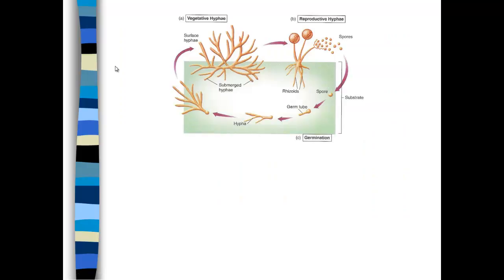Vegetative hyphae will generally grow at the surface since molds are aerobic. They will produce reproductive hyphae, which will release their spores. The spore is then released into some type of media, some type of nutrition source. It will form a germ tube; the germ tube will form hypha; the hyphae will become more extensive, and then the cycle continues.